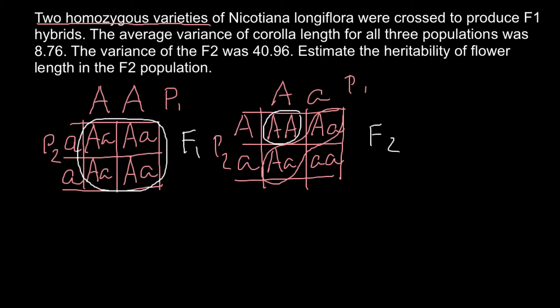In simple Mendelian genetics this gives two phenotypes, or with codominance or incomplete dominance, three phenotypes. The same pattern applies to every allelic pair. Since plants typically have more than 20,000 genes, every plant in the F2 generation will be completely genetically unique. By contrast, every plant in the F1 generation has the same genotype and therefore the same phenotype.